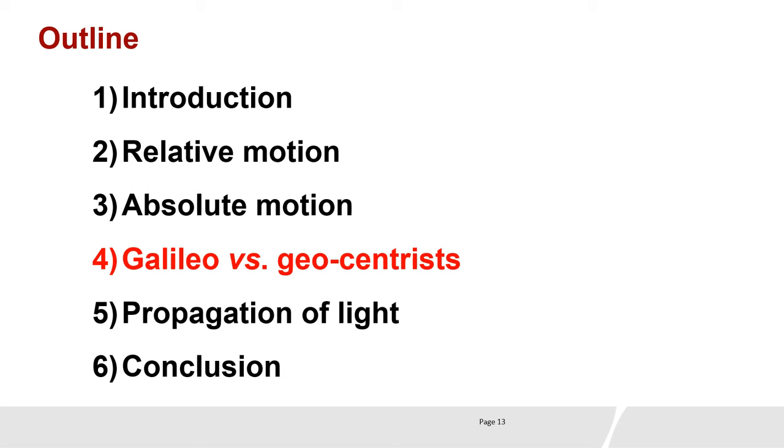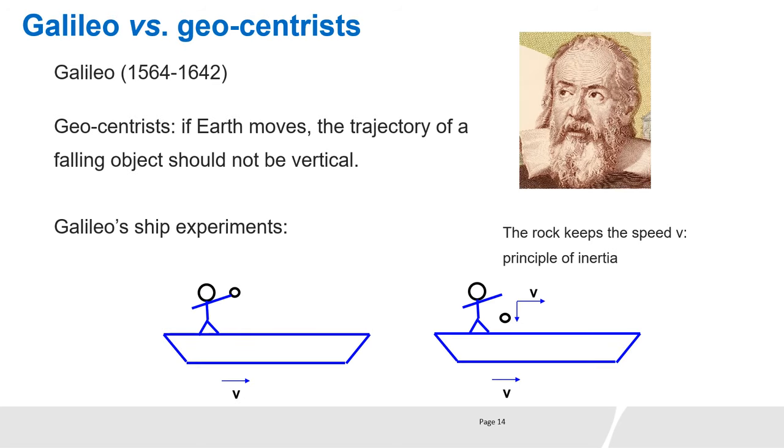Galileo versus Geocentrists. Galileo was a supporter of Copernican heliocentrism. For geocentrists, Earth is not moving. They stated that if Earth moves, the trajectory of a falling object should not be vertical. Because of this statement, Galileo carried out ship experiments that proved that geocentrists were wrong.